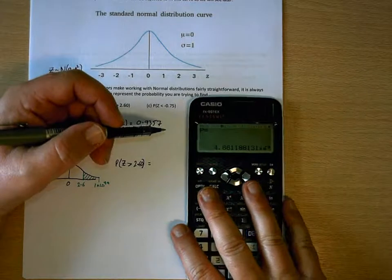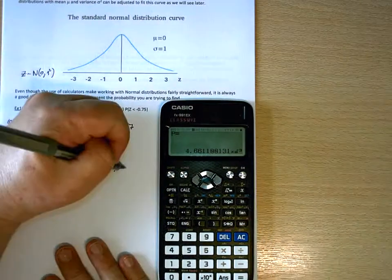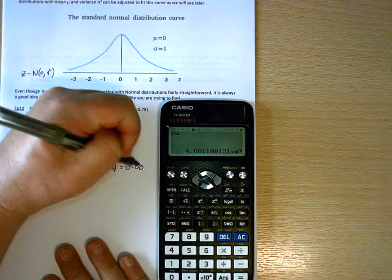So 4.66 times 10 to the minus 3. So that's 0.0047.